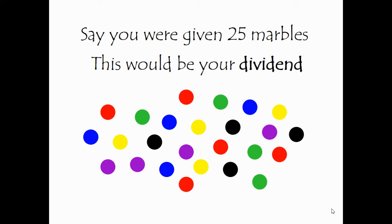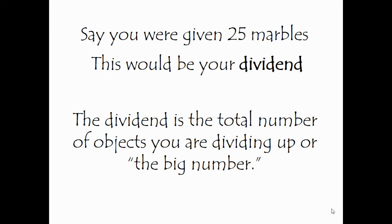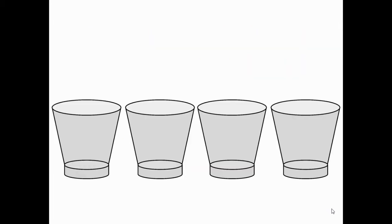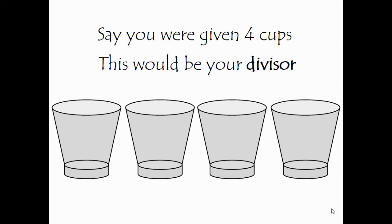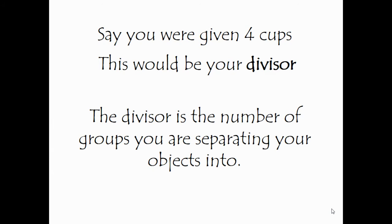Say you are given 25 marbles. This would be your dividend. The dividend is the total number of objects you are dividing up, or the big number in a division problem. Say you were given four cups. This is your divisor. The divisor is the number of groups you are separating your objects into.